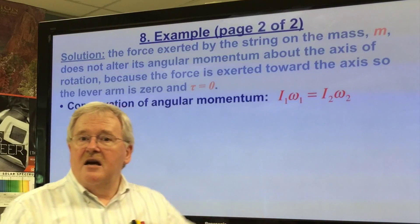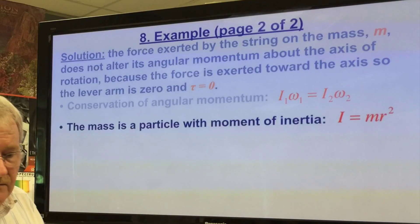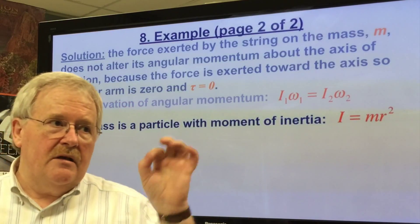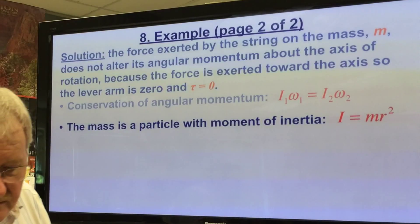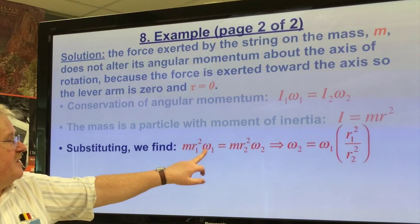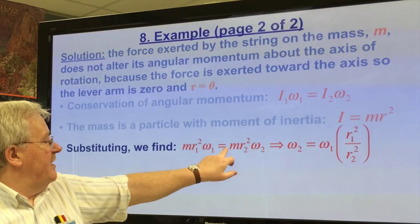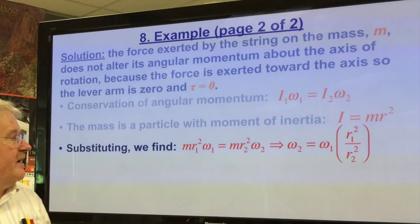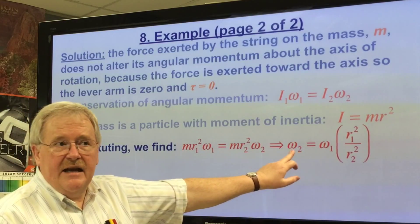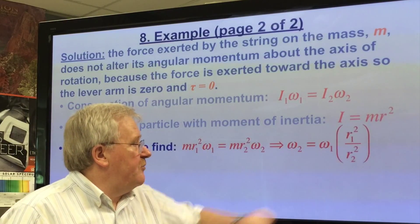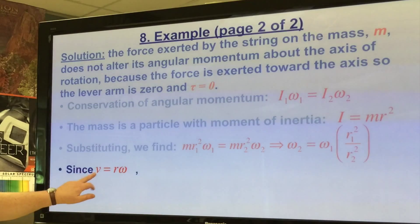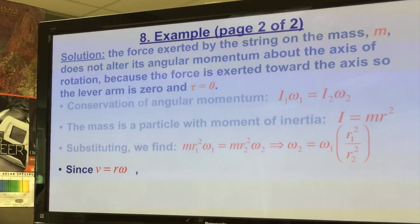The conservation of angular momentum tells us that the moment of inertia in the first instance times the angular velocity must equal the moment of inertia in the second instance times its angular velocity. The mass is a particle with a moment of inertia I = mr². It's almost like we're treating it like a point mass. If we substitute, we find that we've got mr1² times ω1 equals mr2² times ω2. We can now divide across and we end up with the masses cancelling out. The second angular velocity now equals the first angular velocity times the ratio of the squares of those two radii.